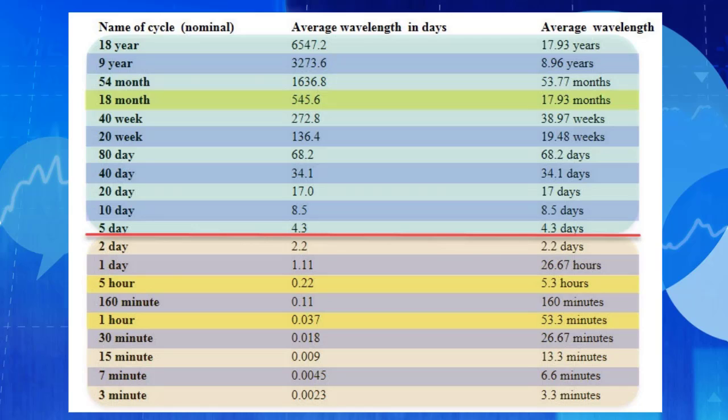All that you need to understand for now is that each cycle in this nominal model is mathematically related to every other cycle.